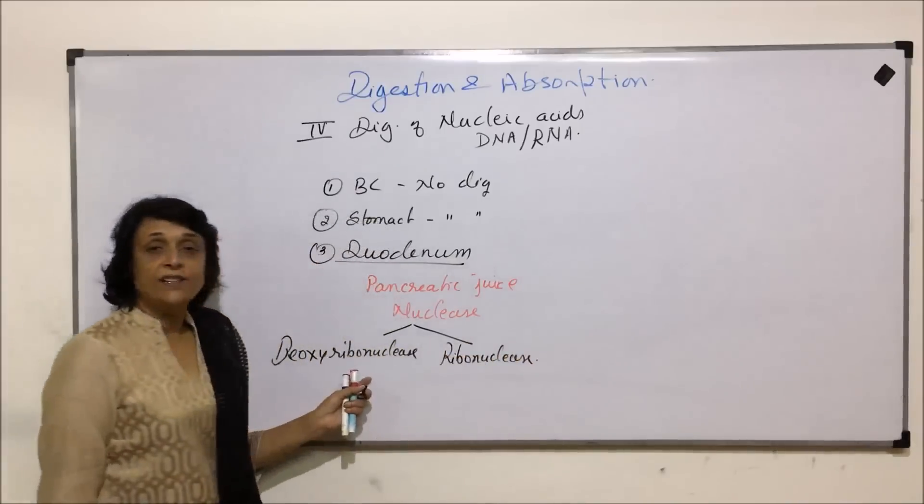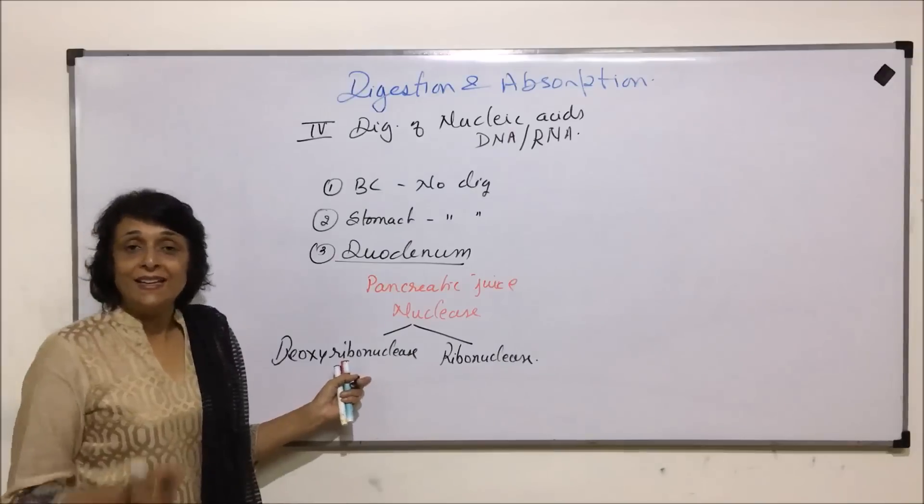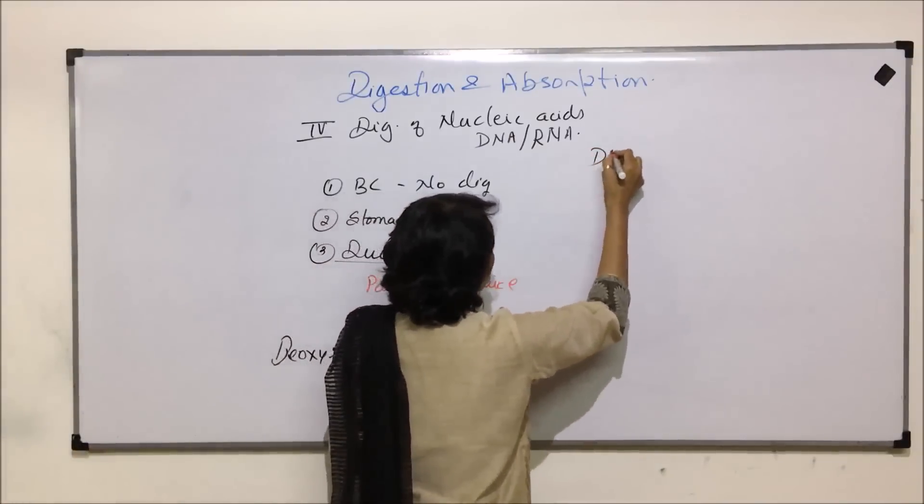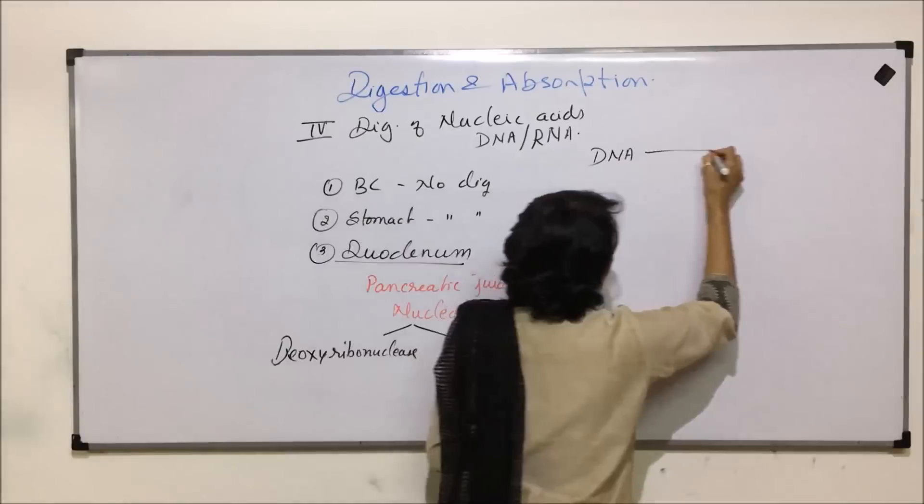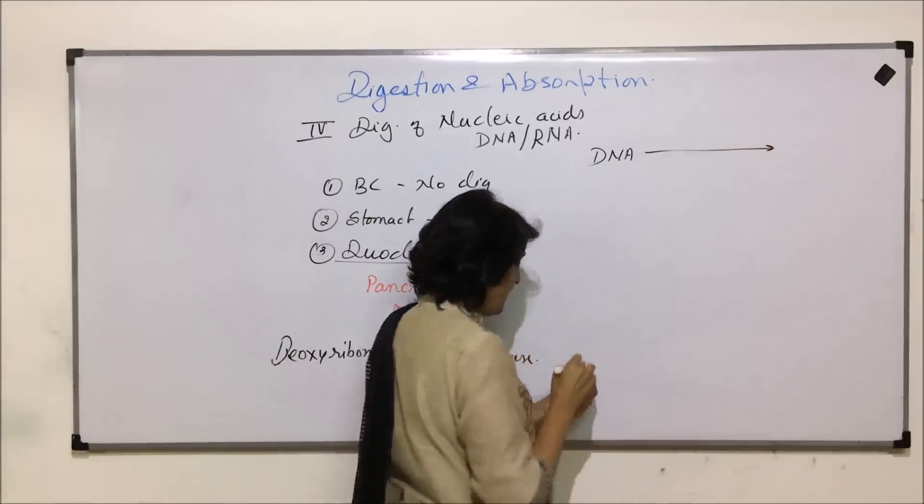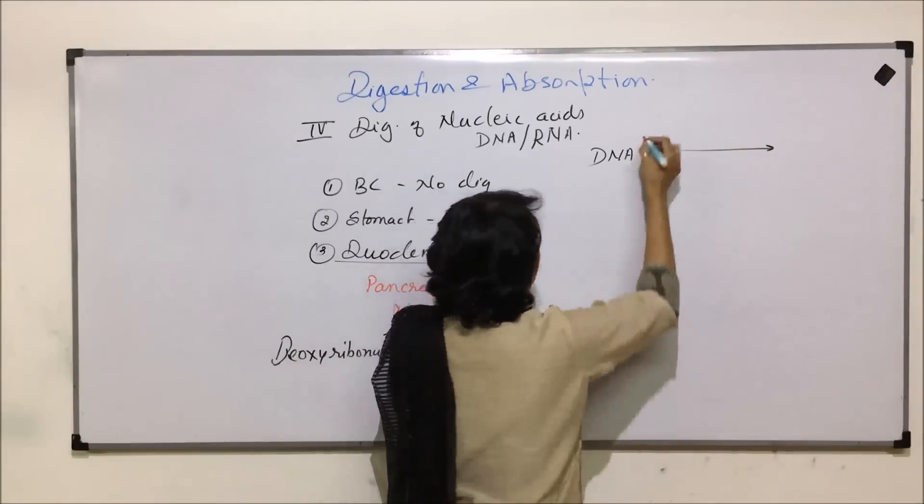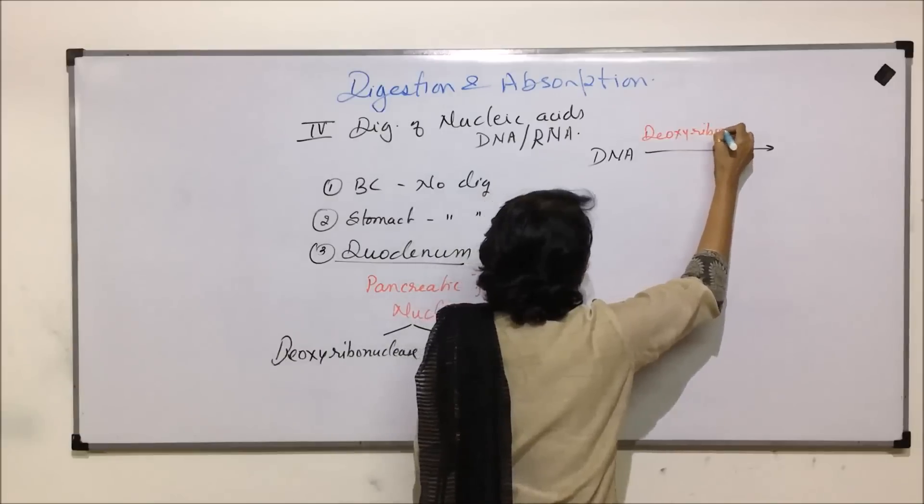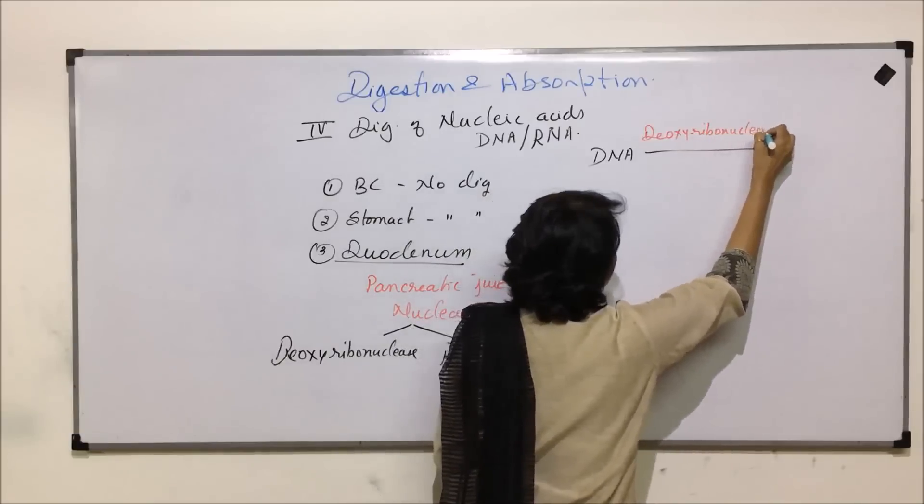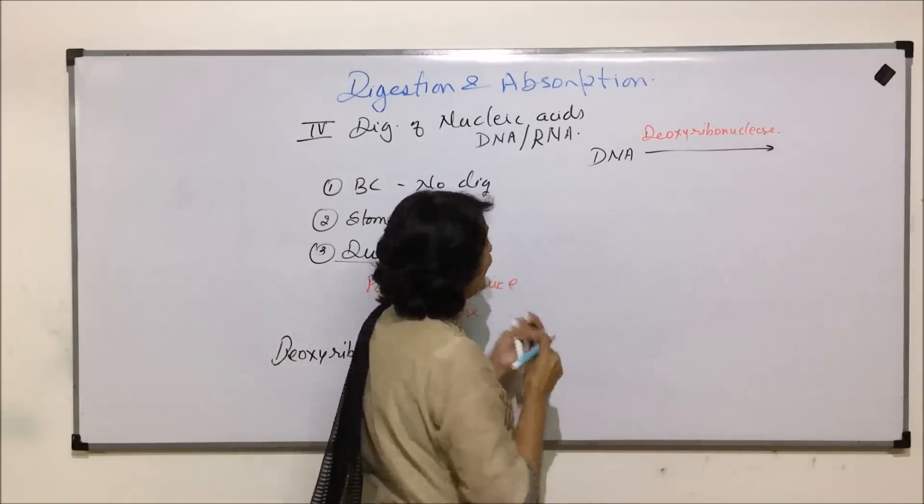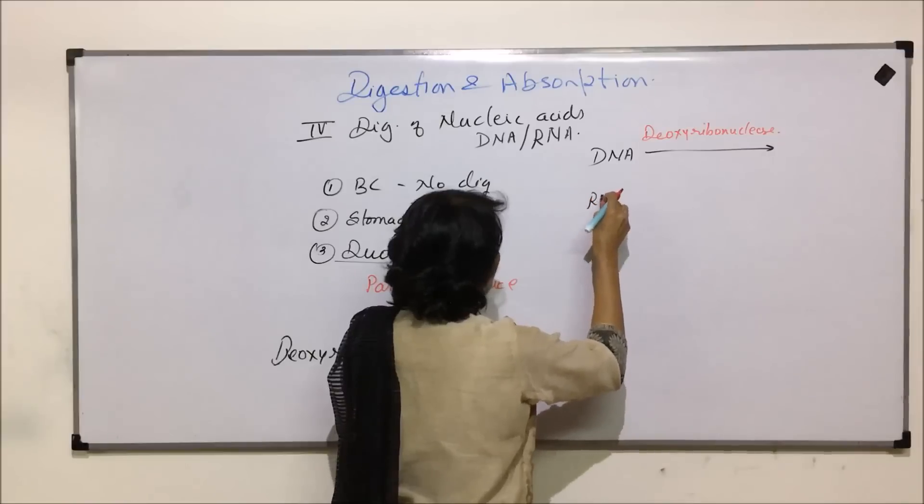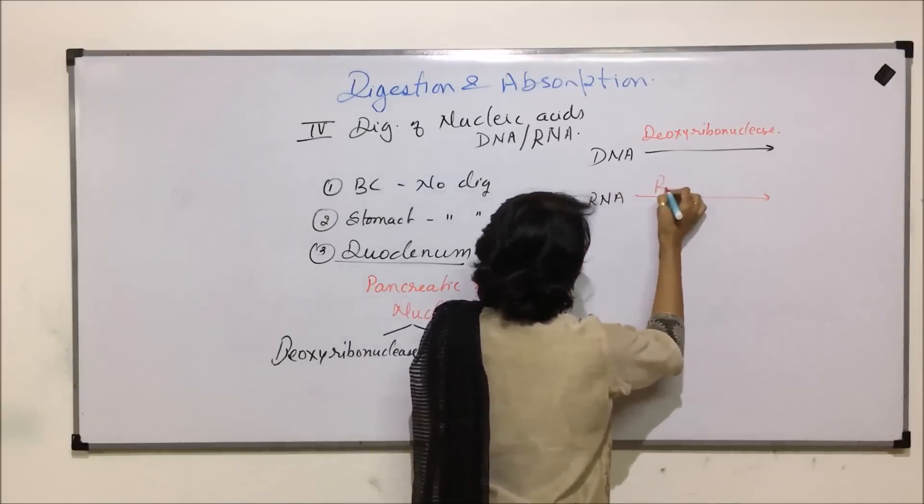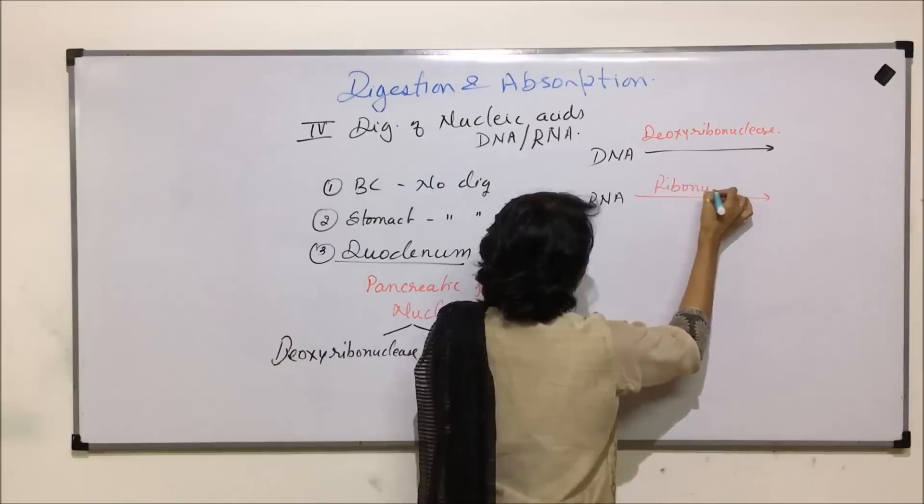And their action is on directly DNA or RNA. So here what is going to happen is DNA is acted upon by deoxyribonuclease and RNA is acted upon by ribonuclease.